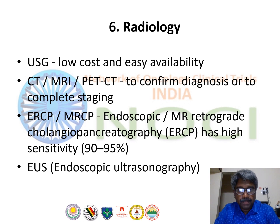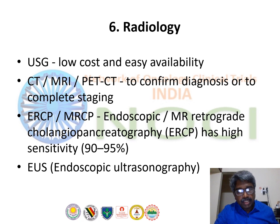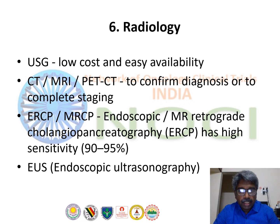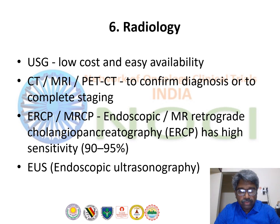Radiology: ultrasound is done for all patients as an initial investigation due to its low cost and easy availability. CT, MRI, or PET-CT are used to confirm ultrasound findings and complete the staging to determine extent of disease involvement. ERCP and MRCP — endoscopic or MRI retrograde cholangiopancreatography — have high sensitivity around 90 to 95 percent. EUS is also performed, especially to obtain FNAC samples.